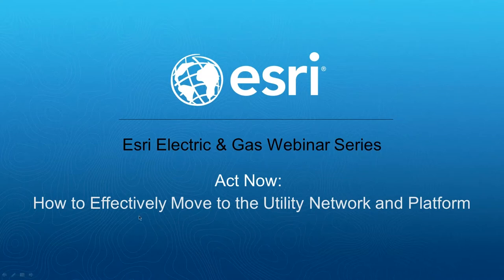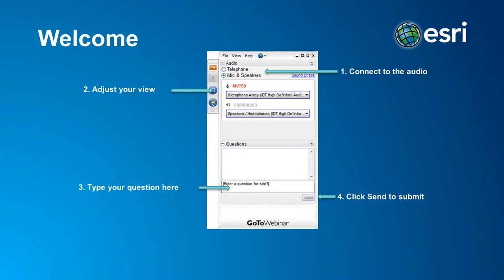Before we get started I'd like to go over a few housekeeping items, then turn it over to our main speakers. On this slide you'll see the different options you have during the webinar. You can change how you connect to the audio or adjust your view. You can ask questions using the question dialog box and hitting the send button. There will be time for Q&A towards the end of the webinar.